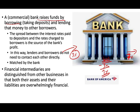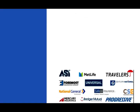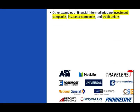Financial intermediaries are distinguished from other businesses in that both their assets and liabilities are financial — they accept money and lend money. Even today, there are banks with virtually no physical existence. Other examples of financial intermediaries include investment companies, insurance companies, and credit unions, all playing similar roles with similar advantages.